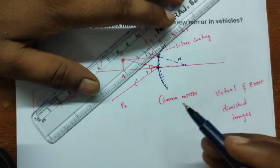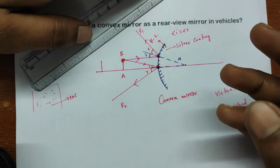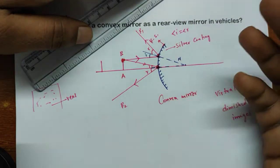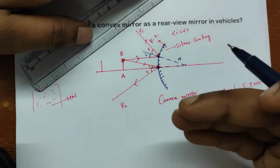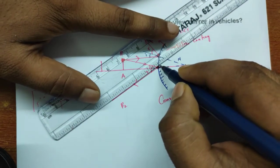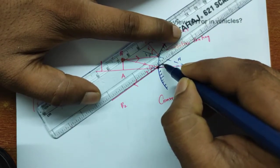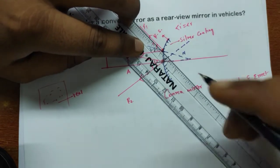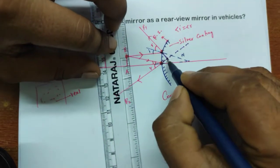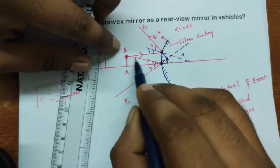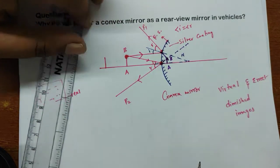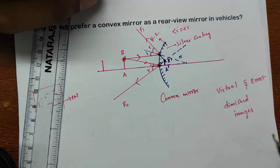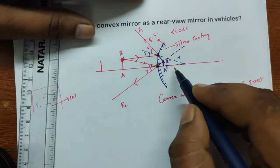So the image that is formed is a virtual image. Actually the real image is not forming at all, but for us it will look like an image is formed — that is why we call it a virtual image. To find it, I extend the reflected rays backwards. Where they meet behind the mirror — that point is the image. So AB is the object and A'B' is the image, and that image is a virtual image.